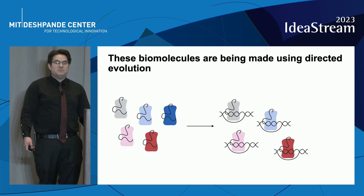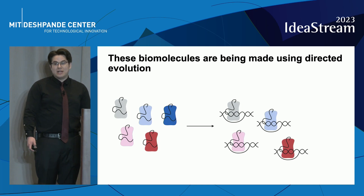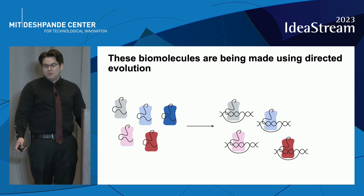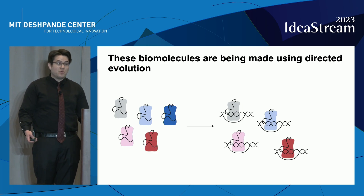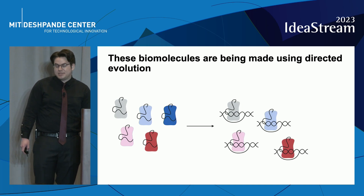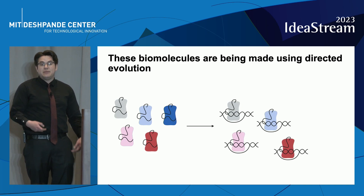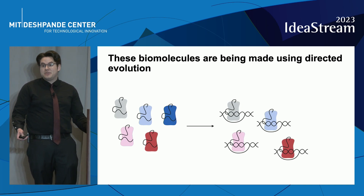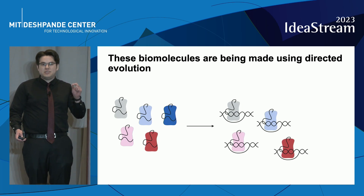A lot of these biomolecules are made through a process called directed evolution, where we start with a biomolecule of interest and we want to change it in a way so that it can perform better as a medicine. One way to do that is by generating millions of different versions or variants of the same biomolecule, each having a small different change.